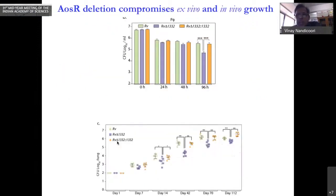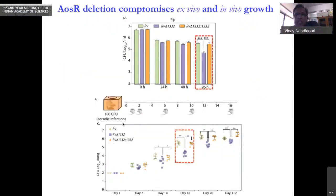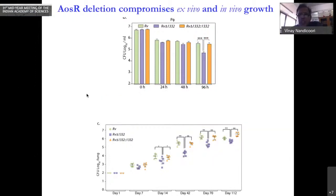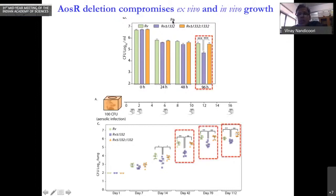However, when we started doing the experiment with cell lines, you can very clearly see that in cell lines, in about 96 hours, we get a compromised growth, approximately log four difference. Mind you, this is a log scale.